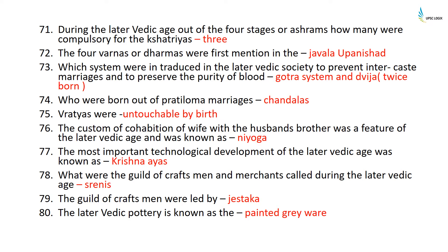The four Varnas were first mentioned in the Taittiriya Upanishad. The Gotra system and the concept of Dvija, meaning twice-born, were introduced in the later Vedic society to prevent inter-caste marriages and preserve the purity of blood. Those born out of Pratiloma marriages were known as Chandalas. Vratyas were untouchables by birth. The custom of cohabitation of a wife with the husband's brother was known as Niyoga.